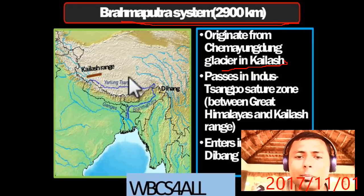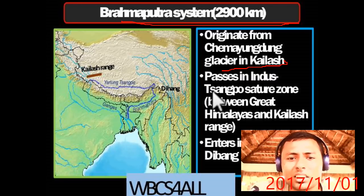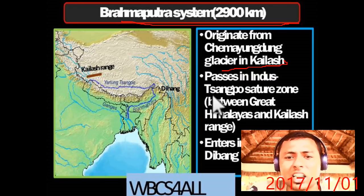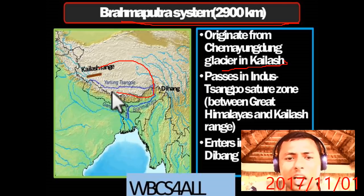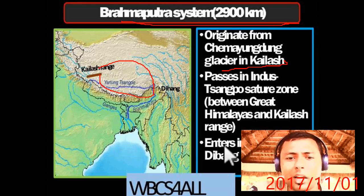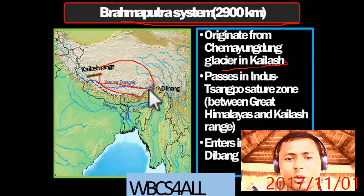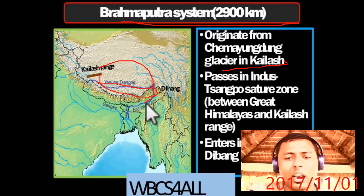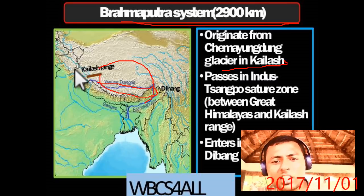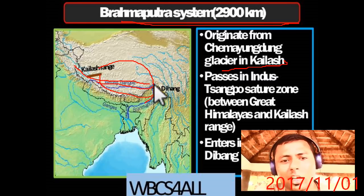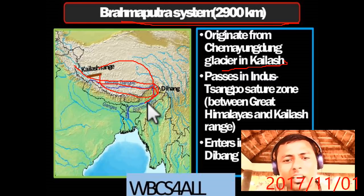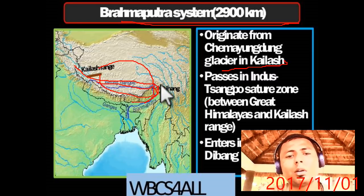The Brahmaputra passes as Tsangpo between the Great Himalayas and the Kailash range. It enters India as Dibang. When it enters India it is known as Dibang. Namcha Barwa is a mountain which makes the river take a U-turn — the river was flowing one way and it suddenly makes a U-turn from Namcha Barwa mountain.